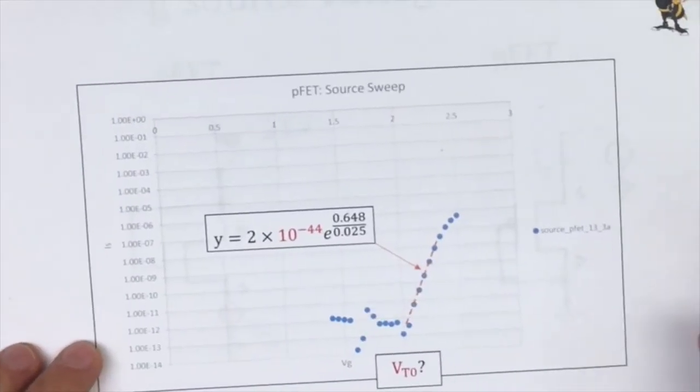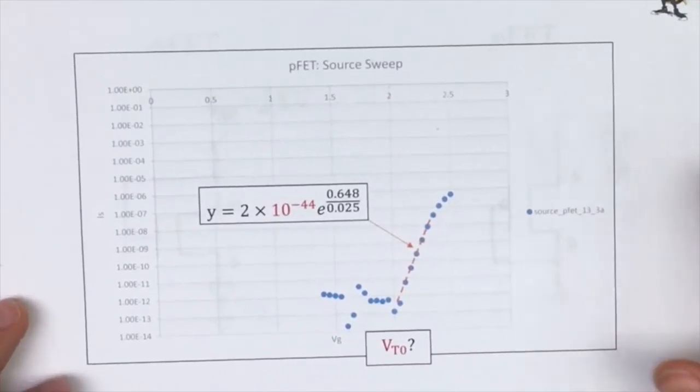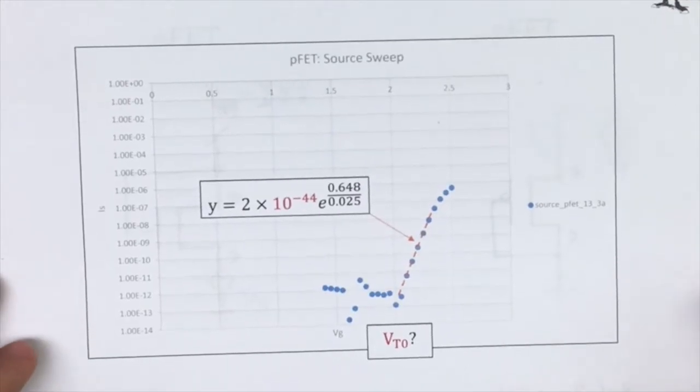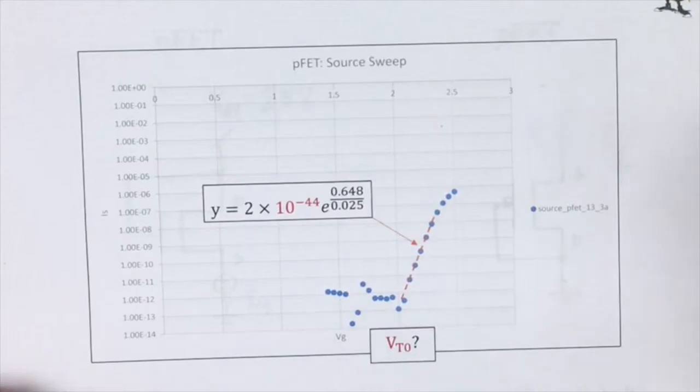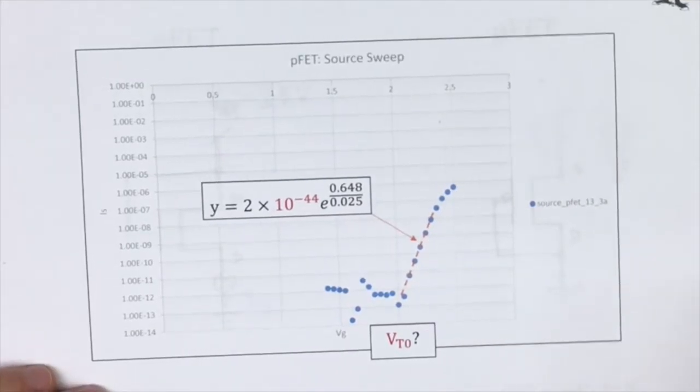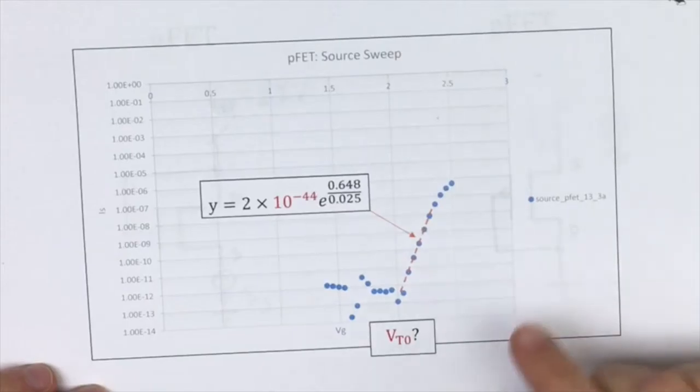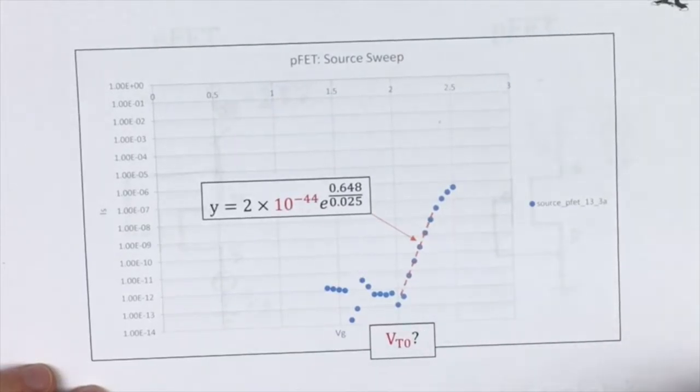And here is the resulting graph that we got for the PFET. I bring up the PFET because there were some issues. With the nFET, not so much. So although we got a pretty decent thermal voltage value, we couldn't fit exactly to the equations. So we didn't quite understand maybe the circuit configuration or how to transform the data to get the correct fit.